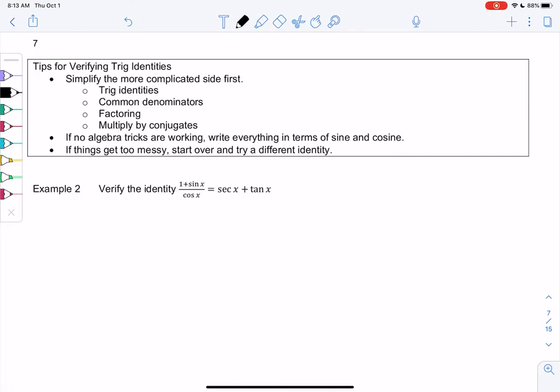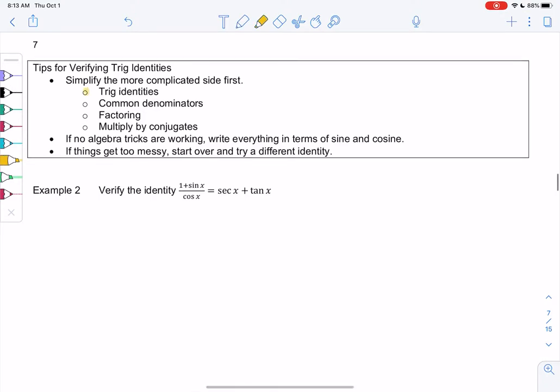To practice simplifying trig, one thing we do is just verify identities. Verifying is just confirming it's true. We'll use trig identities, same thing we talked about last time: common denominators, factoring, conjugates.